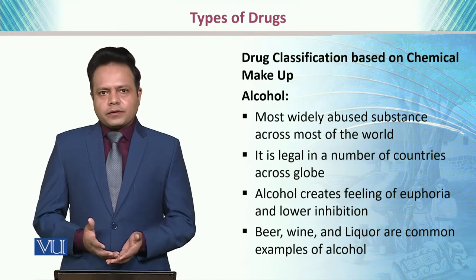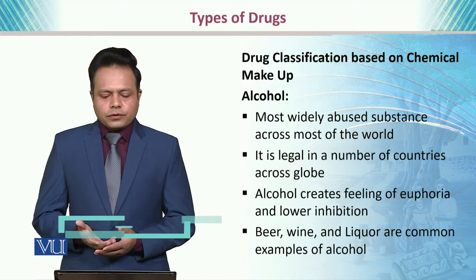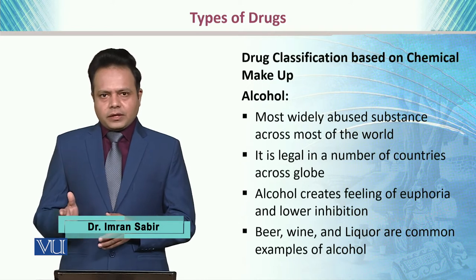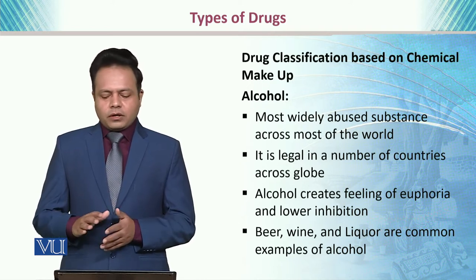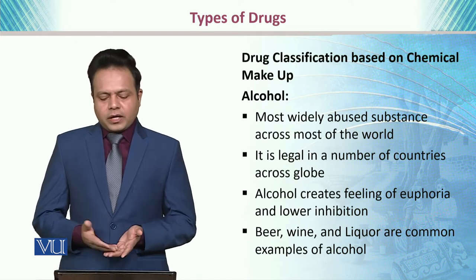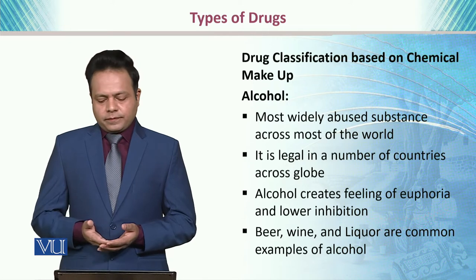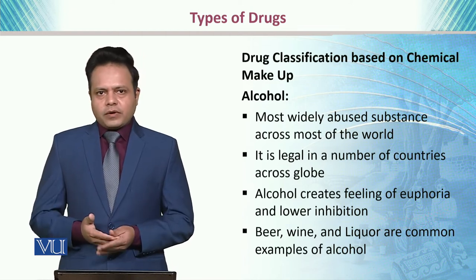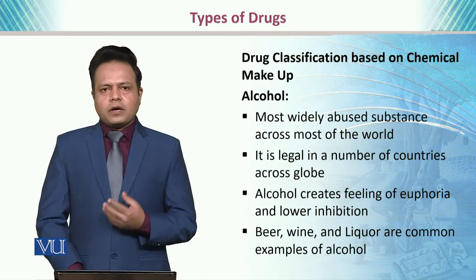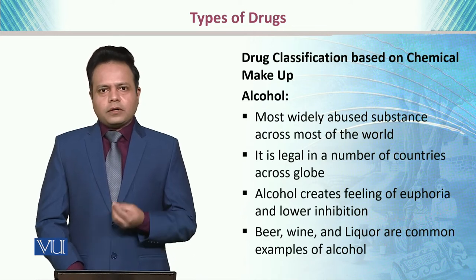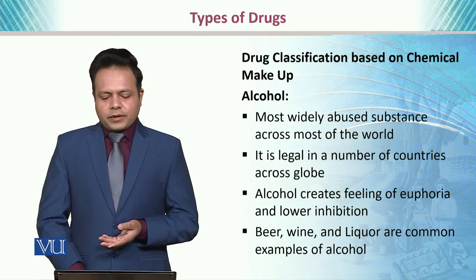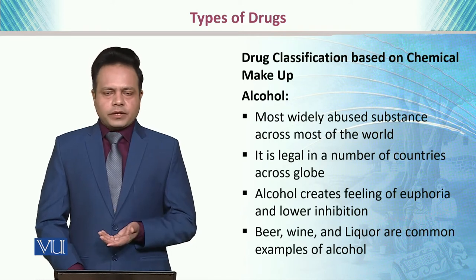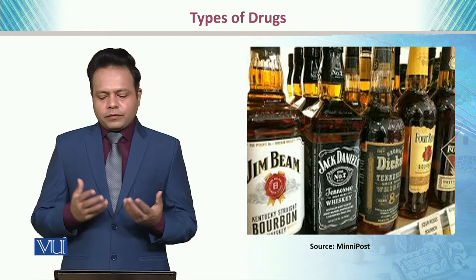Number one is alcohol. The most widely abused substance across the world is alcohol. It is legal in a number of countries across the globe, and alcohol creates the feeling of euphoria and lowers inhibition. Beer, wine, and liquor are the most common examples of alcohol. However, in Pakistan, alcohol is officially banned, but it is considered that alcohol is unofficially or illegally being consumed in Pakistan. Here is a glimpse of alcohol.